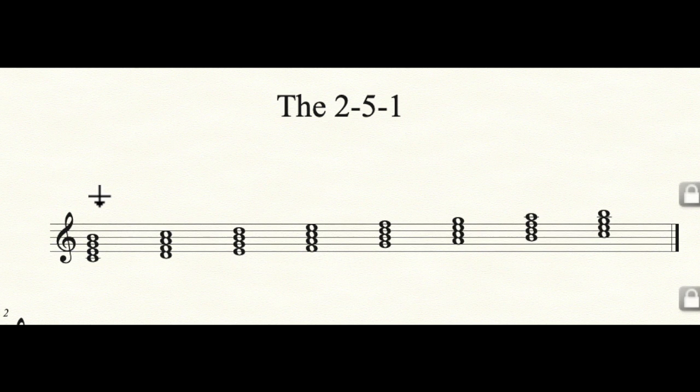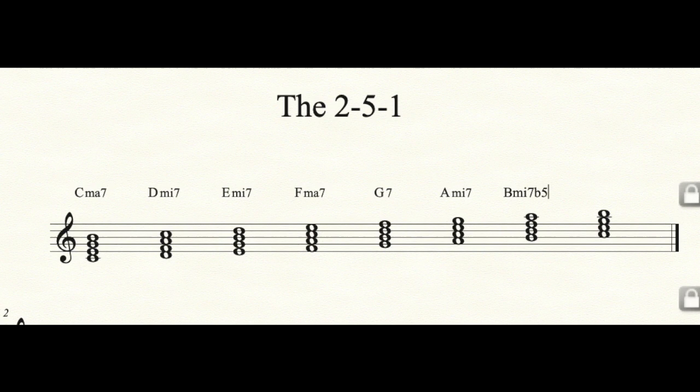You can identify these either by ear or by eye. This first chord is C major 7, then D minor 7, E minor 7, F major 7, G7, A minor 7, and then B minor 7 flat 5 — sometimes known as half diminished, with the symbol being a circle with a line through it — and then C major 7 again.